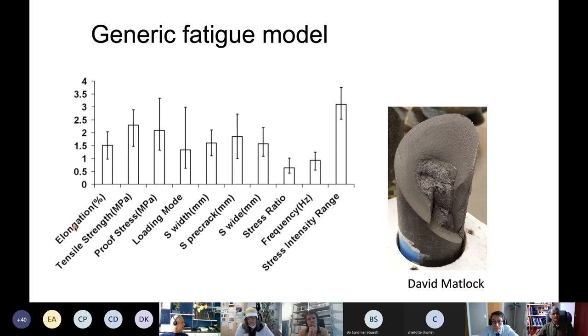And then looking at the physics of the problem and selecting which variables you are going to use. So we were interested in steels and we collected data on elongation, strength, loading mode like shear or tension and two different kinds of in-plane and out-of-plane shear, and sample size, stress ratio, frequency, stress intensity range.